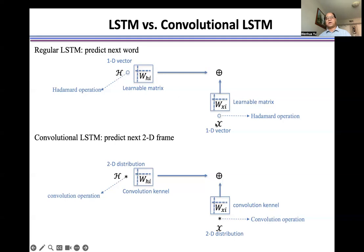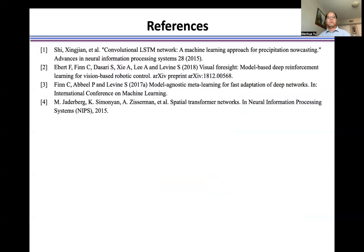And the same way, work on the input vector, then we put it together. In the convolutional LSTM, we need to predict the 2D frame. The input also is a 2D distribution, and the hidden state also is a 2D distribution. So we define a convolutional kernel. This kernel extracts the feature from the hidden state or from the input frame. That's the key difference from the regular LSTM. For more details, please check these references.